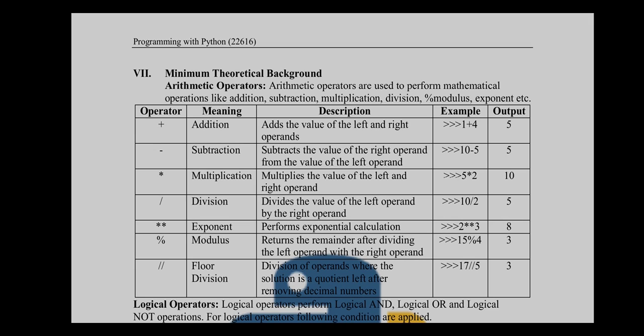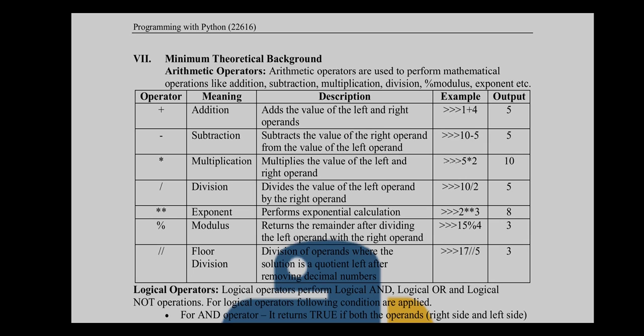The first part covers arithmetic operators. There are various arithmetic operators like addition, subtraction, multiplication, division, exponent, modulus, and floor division. We use the plus operator for addition, minus for subtraction, and the asterisk for multiplication to multiply two operands and show the result. We use a forward slash for division.